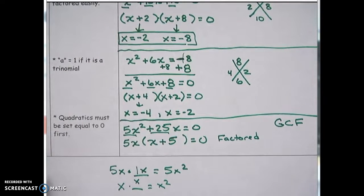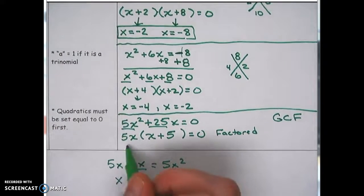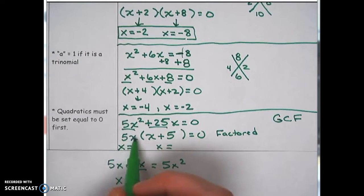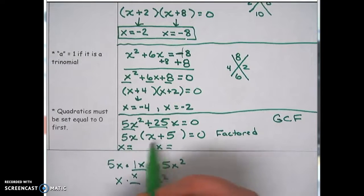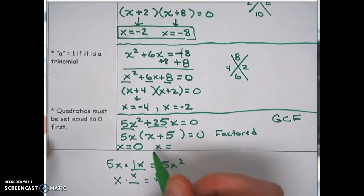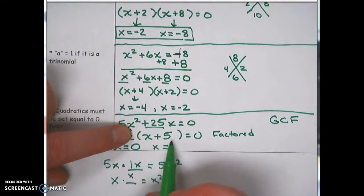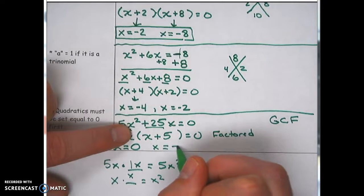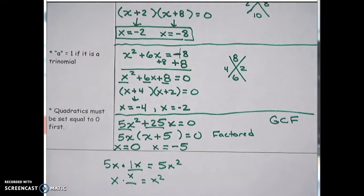Now we use the zero product property. What x value makes 5x equal to 0? That's x = 0, since 5 times 0 is 0. And what cancels the +5 in (x + 5)? That's x = -5. So our two solutions are x = 0 and x = -5.